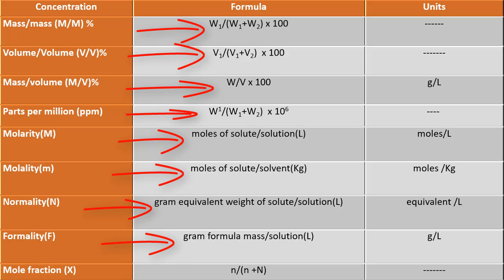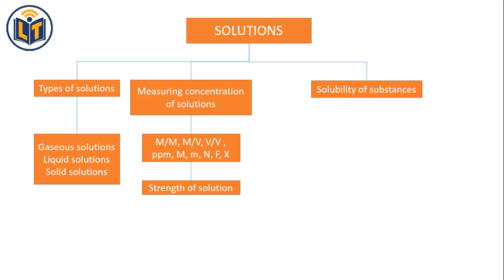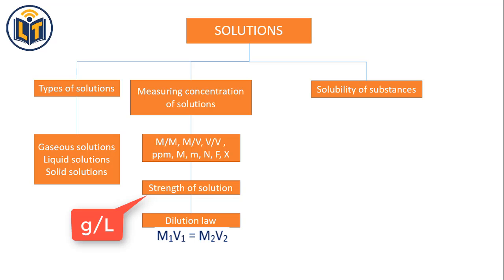Next is formality — it is the gram formula mass of solute present in one litre of solution, with unit gram per litre. It is also affected by temperature. Last one is mole fraction — it is the moles of solute present in total moles of components in the solution. It has no unit and temperature has no effect on mole fraction. Next is strength of a solution — it is the amount of solute in grams present in one litre of the solution, with unit gram per litre. Next is dilution law, which is used to calculate the concentration of a dilute solution. When the concentration of a solution is diluted by adding some extra solvent, the concentration of the dilute solution can be calculated by dilution law.